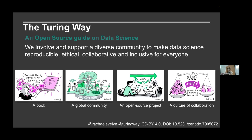So what is the Turing Way? It is an open source project that involves and supports its diverse community in making data science reproducible, ethical, collaborative, and inclusive for everyone. In addition to being an open source project, it is also a book, a global grassroots community where people come together to collaboratively write chapters, build and maintain resources, and share their skills and ideas around best practices in data science and research. It is also a collaboration — the process is the backbone of the project. The moonshot goal is to make collaborative, reusable, and transparent research too easy not to do.